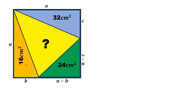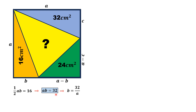If we focus on the orange triangle, the area of this orange triangle is equal to half times a times B, which equals 16. Multiplying both sides by 2 we get aB = 32, and we can also obtain the value of B as 32 over a.